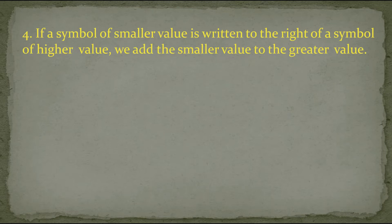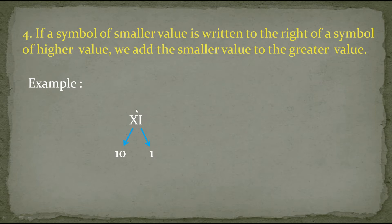Let's understand this by example. Written XI — the value of X is 10 and the value of I is 1. As per this rule, I is written to the right of the higher value, so we add: 10 plus 1 gives us 11. So XI is equal to 11.